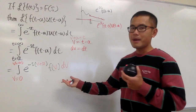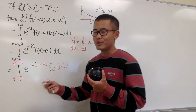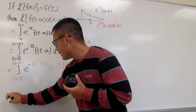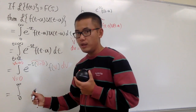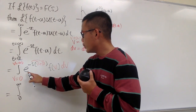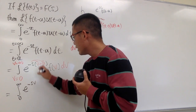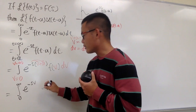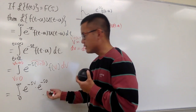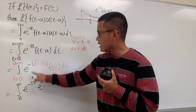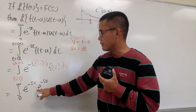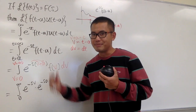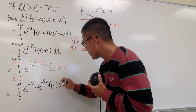Here we have f of t minus a, which is the same as phi, and dt is the same as d phi. Now we can distribute: we have the integral from 0 to infinity, and multiplying out we get e to the negative s phi times e to the negative s a, since you add the exponents. So we have e to the negative s times phi plus a equals e to the negative s phi times e to the negative s a. Then we have f of phi, d phi.